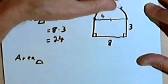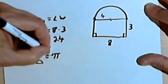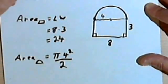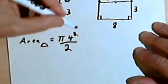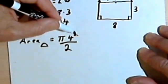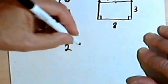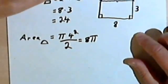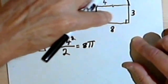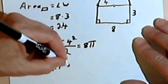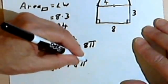So the area of the whole circle would be pi times 4 squared. But I only want half of that, so I'll divide it by 2. 4 squared is 16, and 16 divided by 2 is 8. So that's going to give me 8 pi. Then what I want to do is add together the area for the rectangle and the area for the half circle. So the rectangle was 24 plus 8 pi. I can leave it like that, put it in the calculator using the pi button, or multiply 8 times 3.14 and then add that to 24.